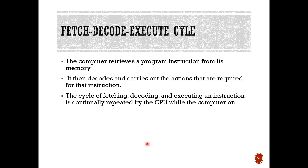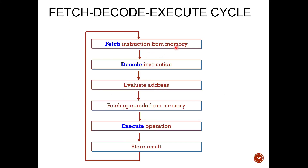In the fetch-execute cycle, the computer retrieves a program instruction from its memory. We look for the instruction in memory, decipher it during the decode cycle, execute it, and store the result. This cycle of fetching, decoding, and executing an instruction is continually repeated by the CPU while the computer is on. It fetches the instruction from memory, evaluates the address, fetches the necessary operands from memory, executes the operation, and stores the data that was retrieved.